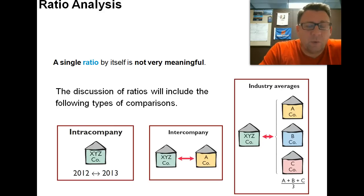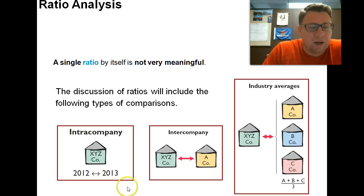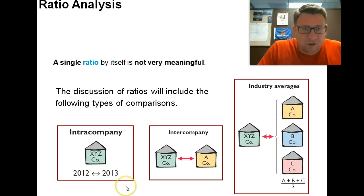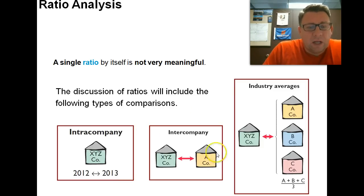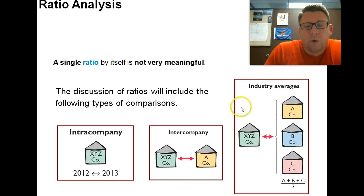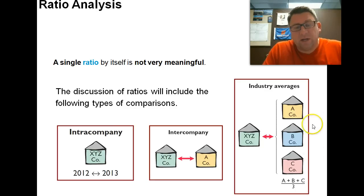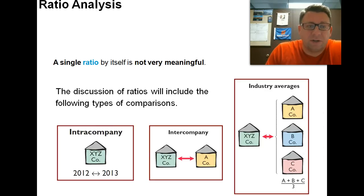In doing so, we also want to make comparisons. We have three different types of comparisons, and all are very valid. We might compare intra-company — how are we doing this year compared to last year and previous years. We might compare inter-company — how are we doing versus our primary competitor. Or we might compare against industry averages — how are we doing against the other companies in our industry.